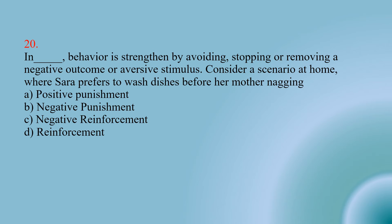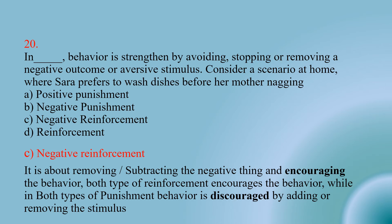Number twenty: In this, behavior is strengthened by avoiding, stopping, or removing a negative outcome or aversive stimulus. Sarah prefers to wash dishes before her mother starts nagging — Option A: positive punishment; Option B: negative punishment; Option C: negative reinforcement; Option D: reinforcement. The right option is C — negative reinforcement: removing or subtracting the negative thing to encourage the behavior. Both types of reinforcement encourage behavior; both types of punishment discourage behavior by adding or removing a stimulus.